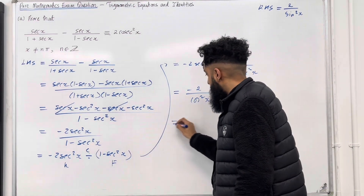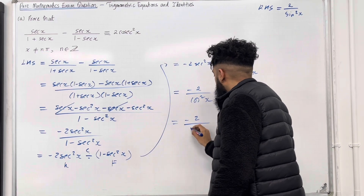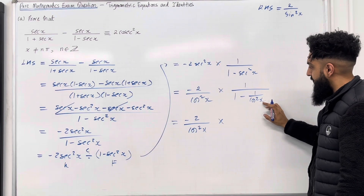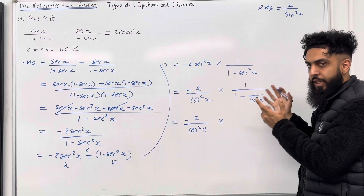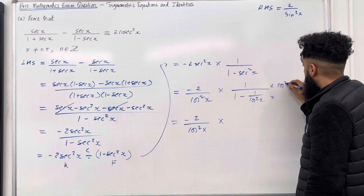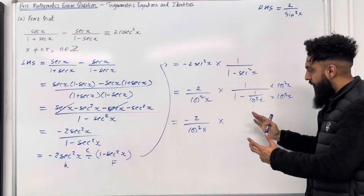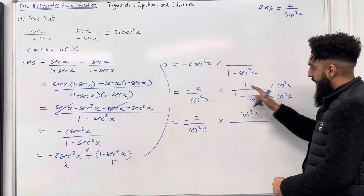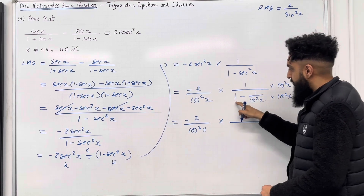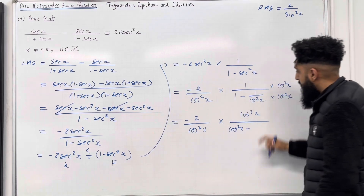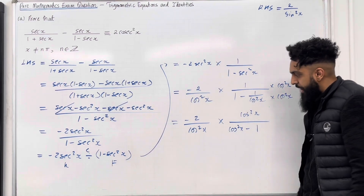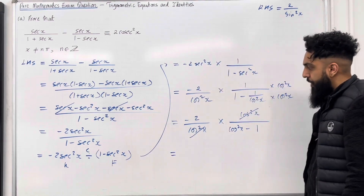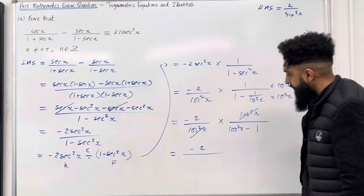Let's take this a step further. We have minus 2 over cos squared x multiplied by that fraction. To simplify the fraction, I can multiply top and bottom by cos squared x. The numerator becomes cos squared x. In the denominator, 1 times cos squared x is cos squared x, and 1 over cos squared x times cos squared x is just 1 — the cos squared x cancels out. So this reduces my expression to minus 2 over cos squared x minus 1.